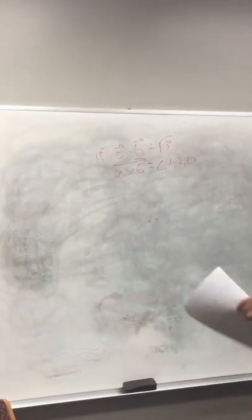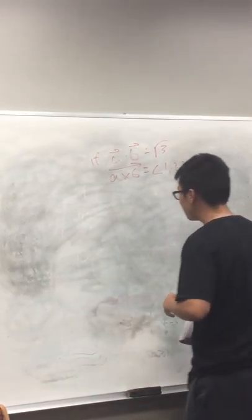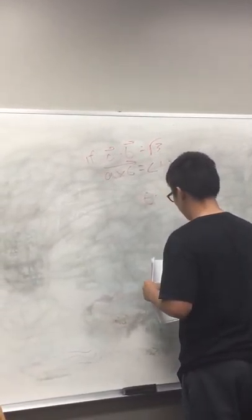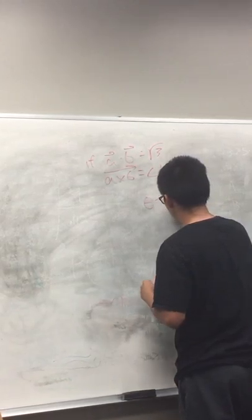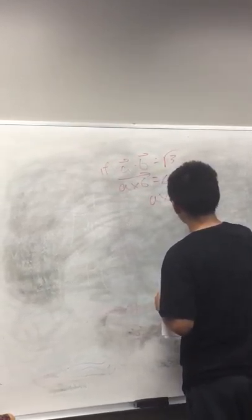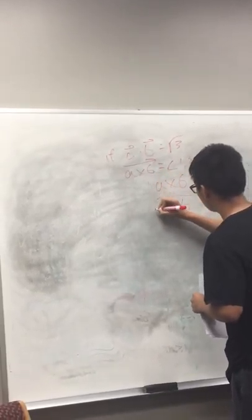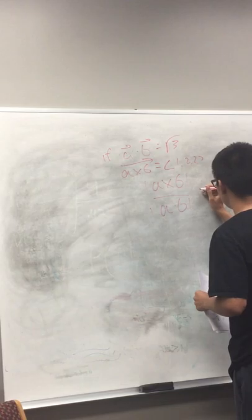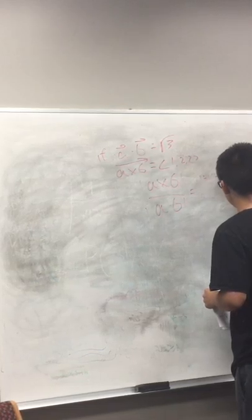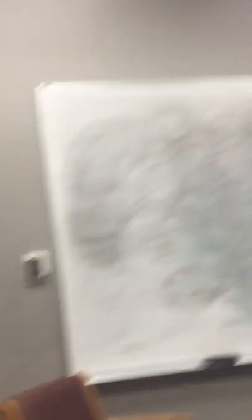Well, to start with that, if we want to find the angle, we can use both the formula of the dot product and the cross product, which will end up essentially being a cross b over a dot b. This is essentially equal to the magnitudes of both, which essentially will be a b cosine theta over... wait, can you pause for a second? Okay. Thank you.